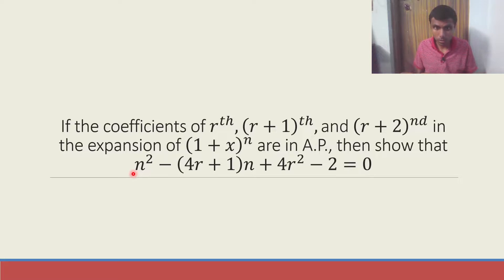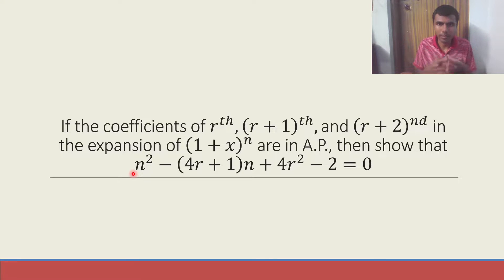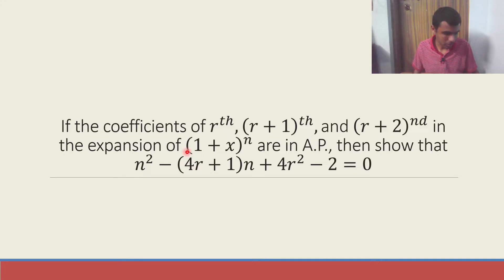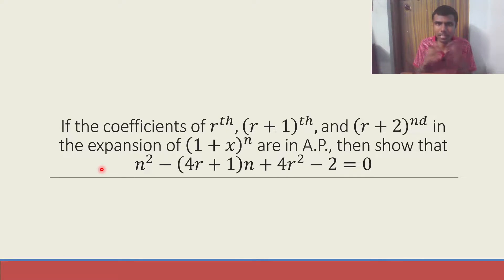How to solve this? The concept we are going to use: first, get the general term, then find the coefficients of the rth, (r+1)th, and (r+2)nd terms in this expansion, and then use the arithmetic progression condition. If you want clarity and not just rote memorization, watch this video till the end.